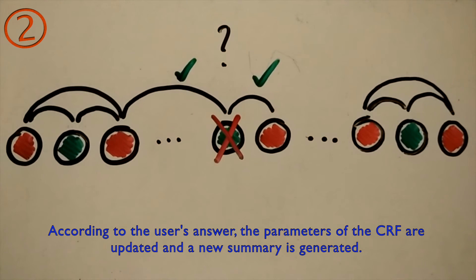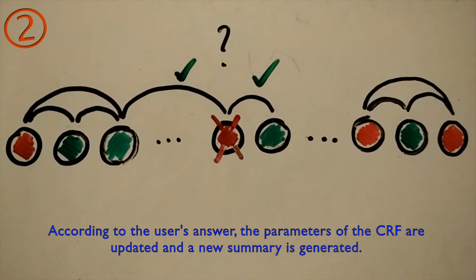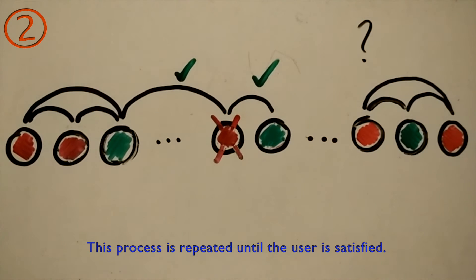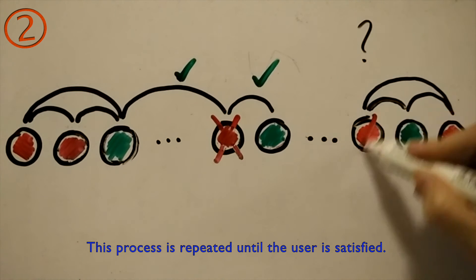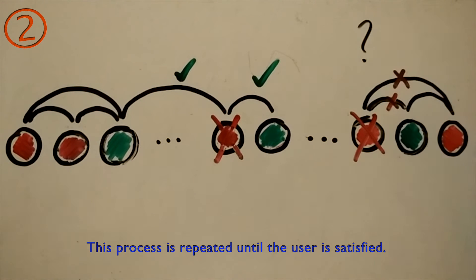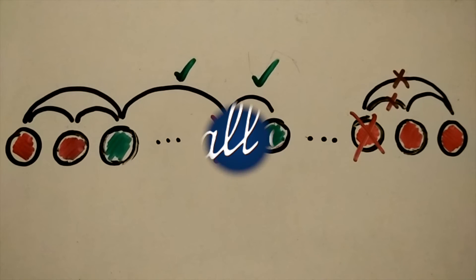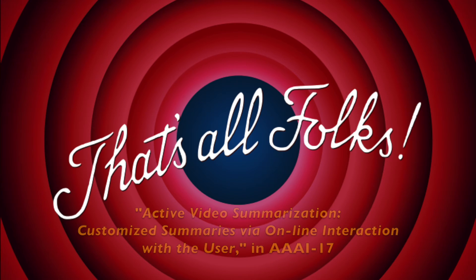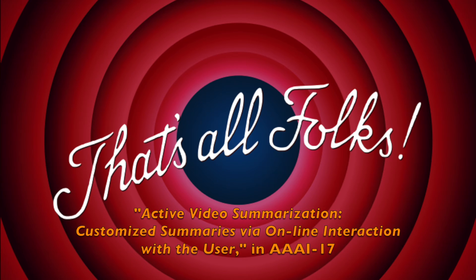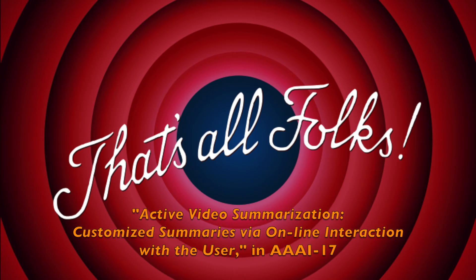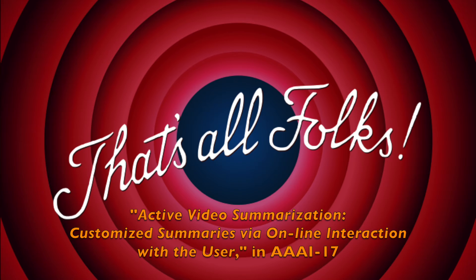According to the user's answer, the parameters of the CRF are updated and a new summary is generated. This process is repeated until the user is satisfied. Want to know more? Check out our paper at AAAI 2017 or drop us an email.